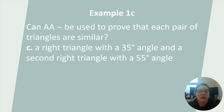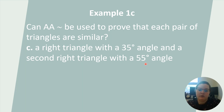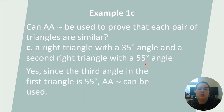In example 1C: can the angle-angle similarity postulate be used to prove each pair of triangles are similar? We have a right triangle with a 35-degree angle and a second right triangle with a 55-degree angle. We have 90° and 90°, so that's one pair of congruent angles. In a right triangle the remaining two angles sum to 90°, so 90 minus 35 gives us 55 degrees. That means the triangles share a second pair of congruent angles, and the angle-angle similarity postulate can be used to prove this.